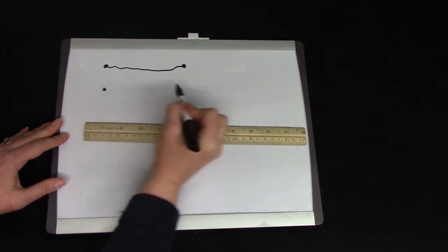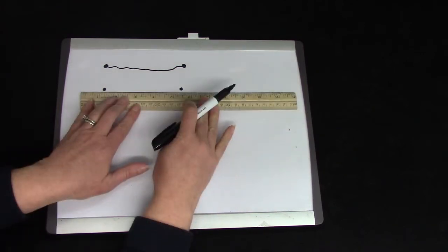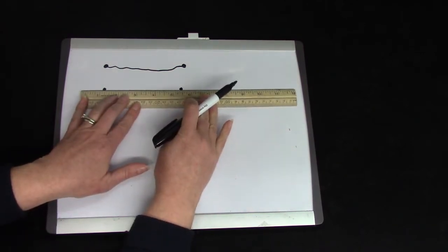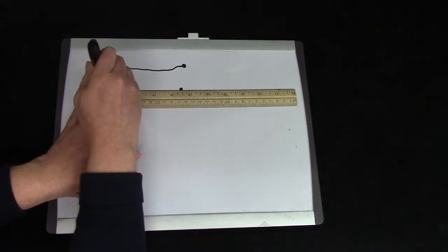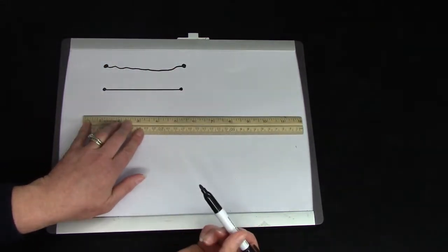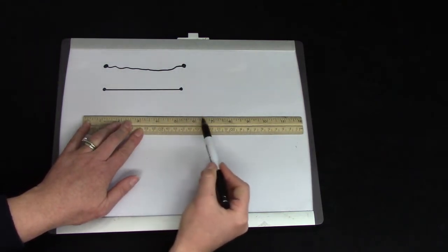A ruler allows us to make a very straight line. When we use a ruler, we put our ruler between the two dots and we draw from one dot to the next. And look at how straight my line is! My line is straight because I was using the ruler.